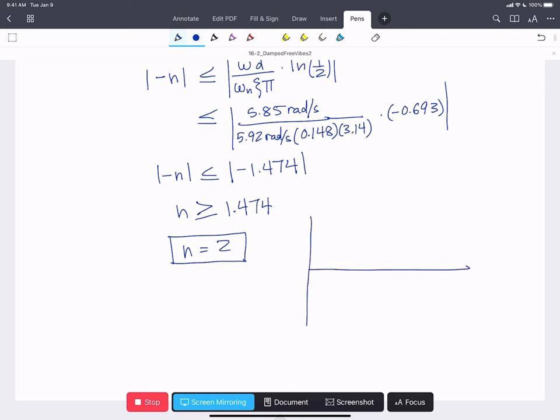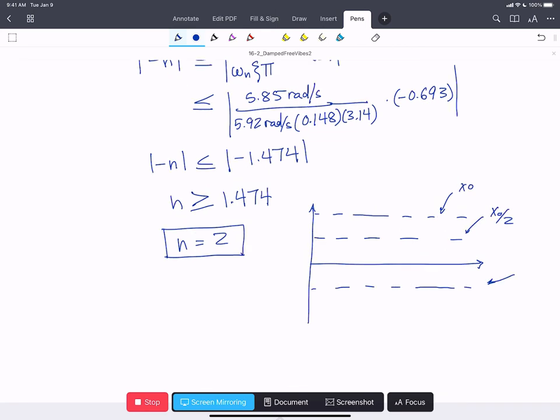So let's draw that out. It means if this is x naught and this is x naught over 2, here we have negative x naught over 2 and x naught. We start here, we're going to dip down to the first peak and then up to the second peak. There's peak 1, there's peak 2, and there it's below our x naught over 2.